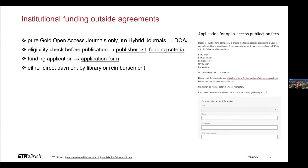Finally, let us focus on financing outside the agreements. If your desired journal is not part of an agreement but is a gold journal, you can apply for APC funding via our application form — a screenshot of which is shown on the right-hand side of the slide. The Directory of Open Access Journals, abbreviated DOAJ, indexes gold journals and can help you figure out whether your journal is gold or hybrid, as hybrid journals are never indexed in the DOAJ. Once you submit the application form, we will assess whether the APC can be funded by ETH Library. If we confirm funding and you have already paid the APC, a reimbursement is possible, but it is easier for both sides if you simply send us the invoice for payment.